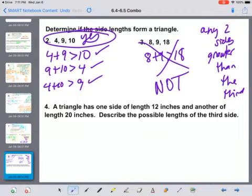And then in the last example here, a triangle has one side length of 12 inches and another side of 20 inches. Describe the possible lengths of the third side. So it has side lengths of 12, 20, and X.